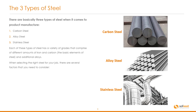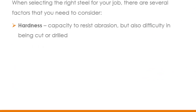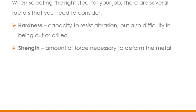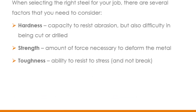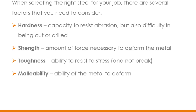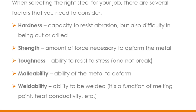Each of these types of steel has a variety of grades that comprise different amounts of iron and carbon — the basic elements of steel — and additional alloys. When selecting the right steel for your job there are several factors to consider: hardness, which is the capacity to resist abrasion but also difficulty in being cut or drilled; strength, which is the amount of force necessary to deform the metal; toughness, the ability to resist stress and not break; malleability, the ability of the metal to deform; and weldability, which is the ability to be welded — a function of melting point, heat conduction, etc.